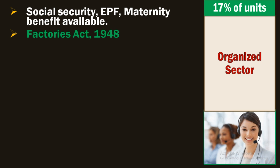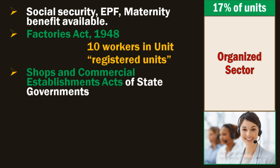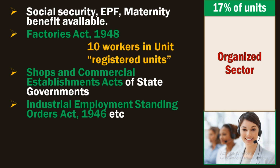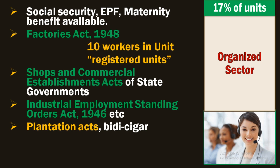Besides this, state governments also have some provisions. For example, if companies are registered under the Shop and Commercial Establishment Act 1947, they are also called organized sector. Additionally, if registered under the Industrial Employment and Standing Orders Act 1946, you are again organized sector. Also the Plantation and Labour Act 1951, and PSUs or cooperatives — if registered under these, you are organized sector.